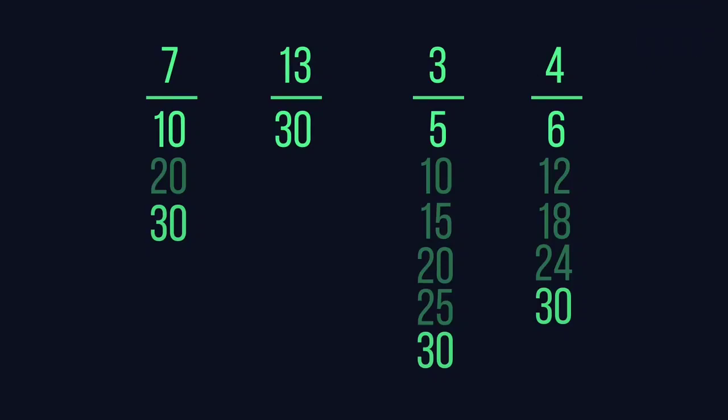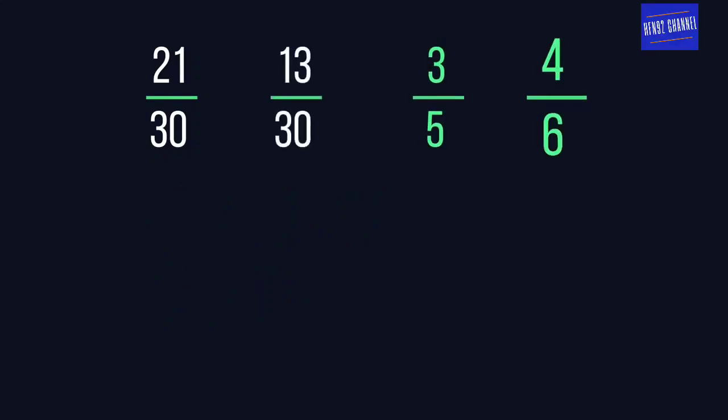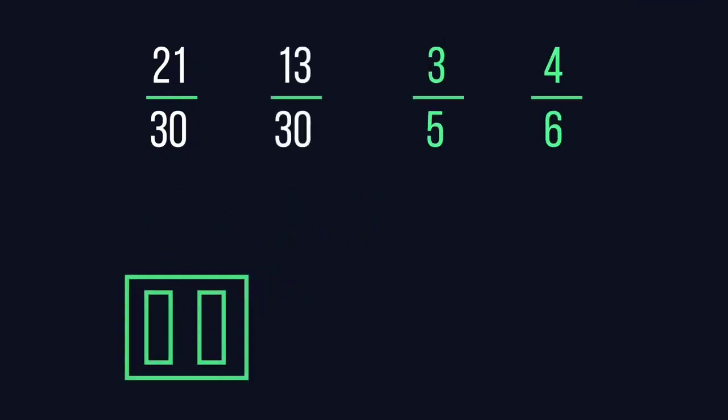To find the equivalent fraction for 7 over 10, we need to see how many tens there are in 30. 30 divided by 10 is 3, so each value in the fraction needs to be made three times larger. Can you work out the equivalent fractions for the other two? Pause the video and have a go.